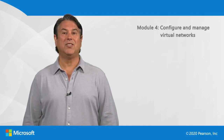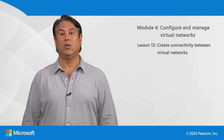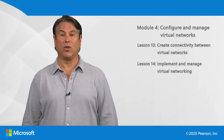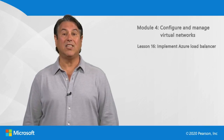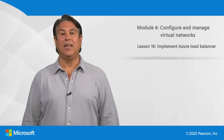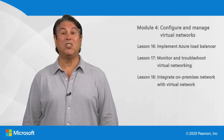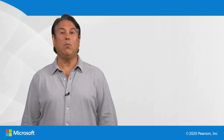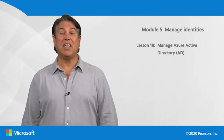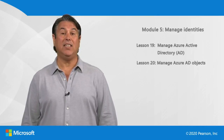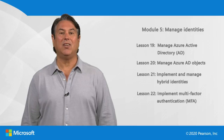Module four has six lessons, and it's all about the virtual networking infrastructure. In lesson 13, we'll create connectivity between virtual networks. In lesson 14, we'll implement and manage virtual networking. Lesson 15 covers creating and configuring network security groups, NSGs. Next, in lesson 16, we'll implement Azure load balancers. Then, in lesson 17, we'll monitor and troubleshoot virtual networking. In the last lesson of this module, we'll integrate on-premises networks with virtual networking. The final module, module five, is titled Manage Identities. The four lessons in this module cover Managing Azure Active Directory, Managing Azure AD objects, Implementing and Managing Hybrid Identities, and in the final lesson, Implementing Multi-Factor Authentication, MFA.